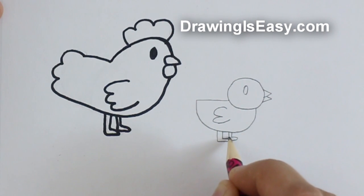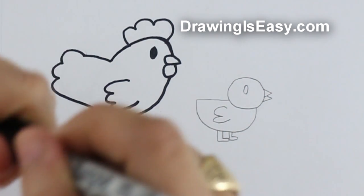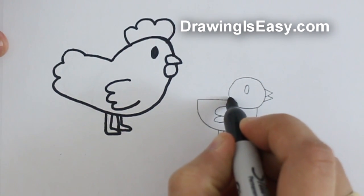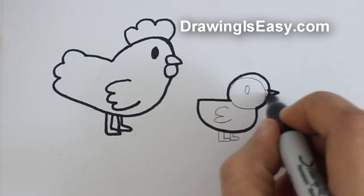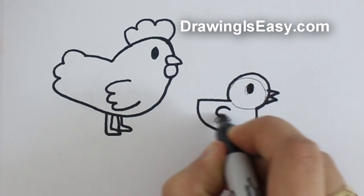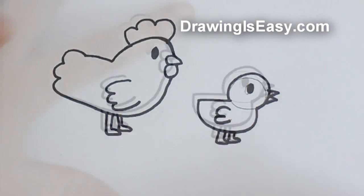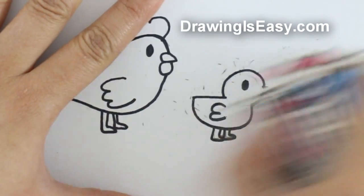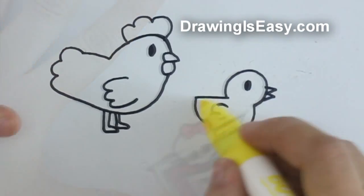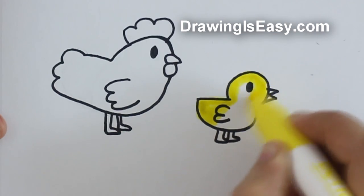Again, we will take our marker and draw only on the lines that we want to keep. Remove the pencil marks and color your chicken however you like.